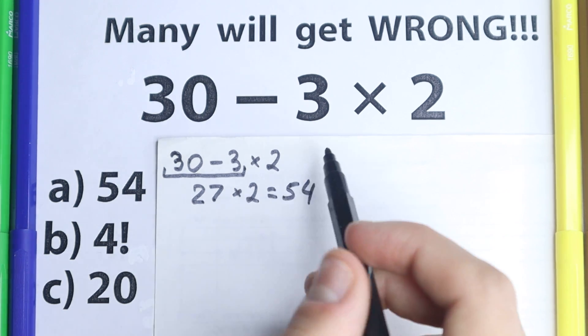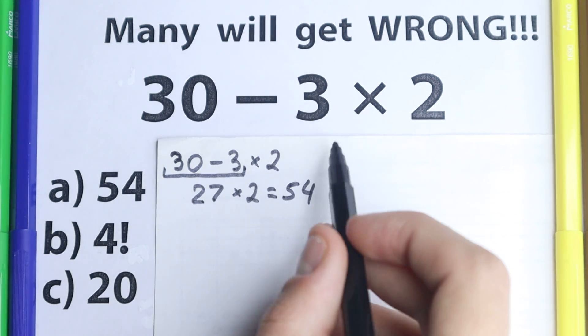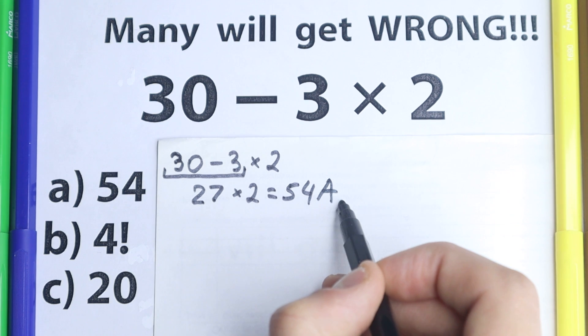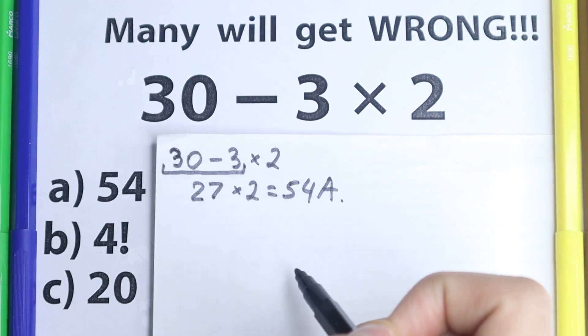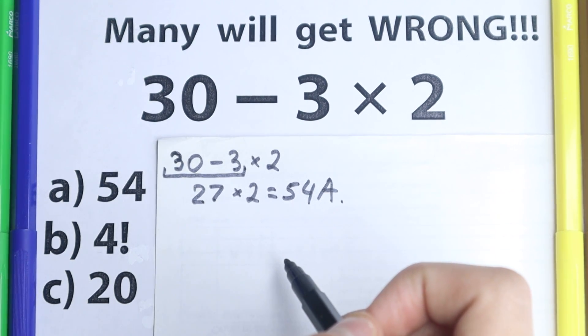As you can see 54, a lot of students say okay, 54, option A, this is a correct answer. But we need to know, then I ask them, what about order of operations?